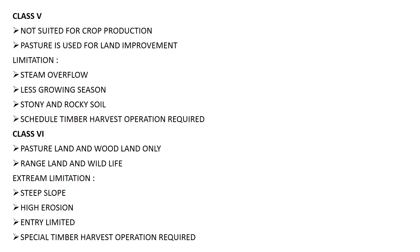In Class 5 land, it is not suited for any crop production. Here, only pasture can be used for land improvement — first you grow pasture, then improvement of land occurs, and then you can go for some selective agricultural crops. However, in Class 5, agriculture crop growth is generally not possible due to many limitations like stream overflow, limited growing season, and very stony or rocky soil. If Class 5 land is in a forest area, scheduled timber harvest operations are required.